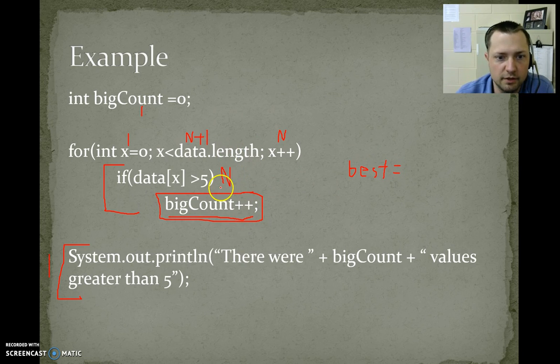So we'd have an n, 1, 2, 3. Best case, this is 3n plus 1, 2, 3, 4.